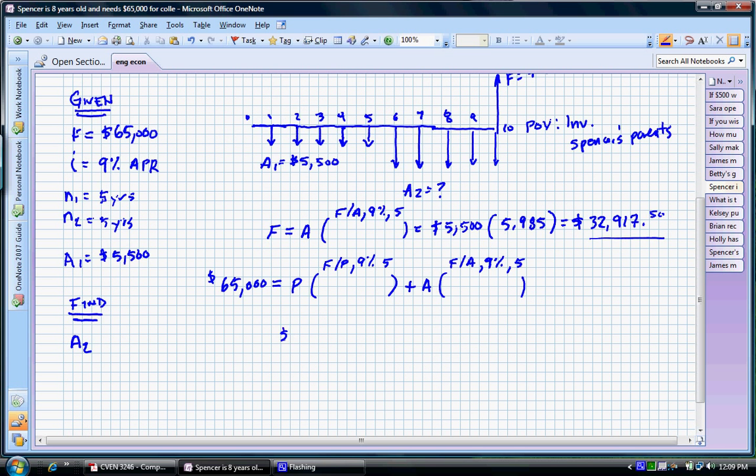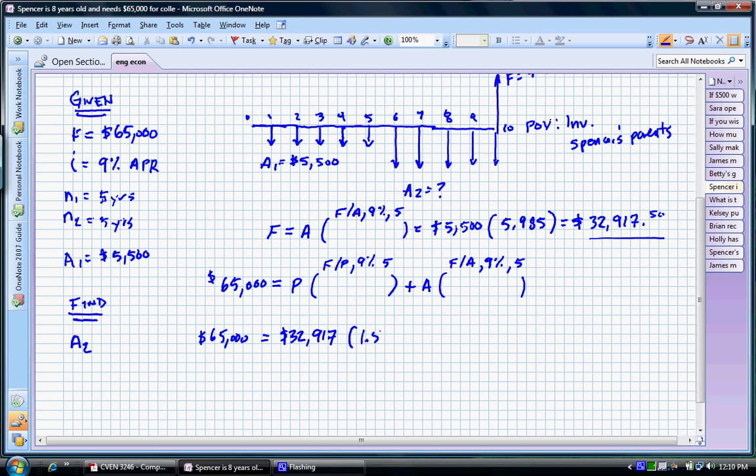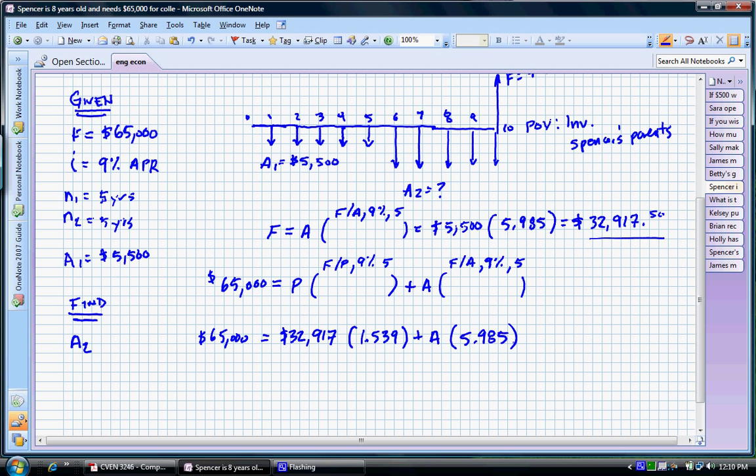So let's put these values in here, $32,917, and we're going to multiply that by F slash P, 9% and five. Now we're going to use the 1.539. 1.539, and we're going to add to that our A, which we don't know at this point, multiplied by the F slash A factor, 9% and five. The F slash A factor, 9% and five, is again 5.985, the same value we used before. And we're going to solve for A, and A in this case is equal to $2,395.98.